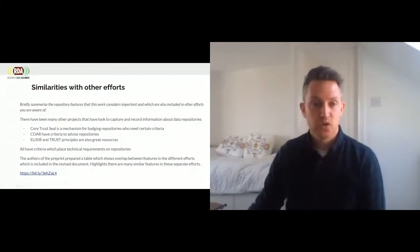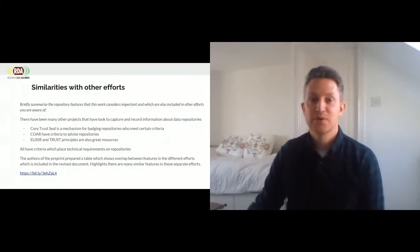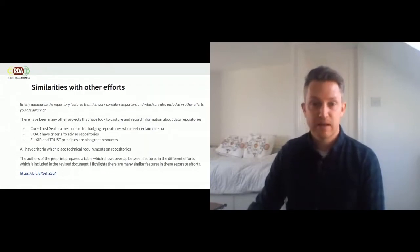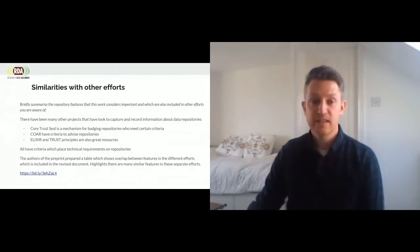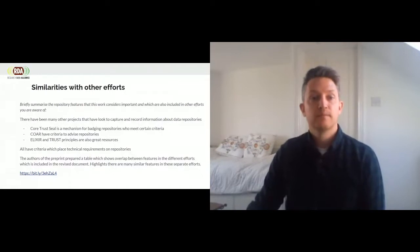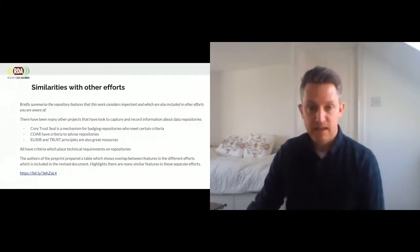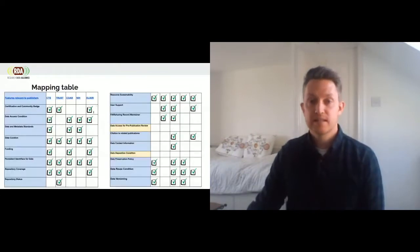This is not the only effort to look at repository features, as Susanna mentioned, and many of the other highly notable efforts are also talking in this session. CoreTrustSeal is a mechanism used to badge repositories who meet certain criteria, which can be really beneficial for authors who want peace of mind when sharing their data long term. COAR has been working on their criteria to advise repositories. Also, the work of ELIXIR and the TRUST principles are great resources. All of these different efforts are looking to place requirements on repositories in different ways. The authors of the preprint put together a mapping table earlier this year which shows the similarities between the different criteria.